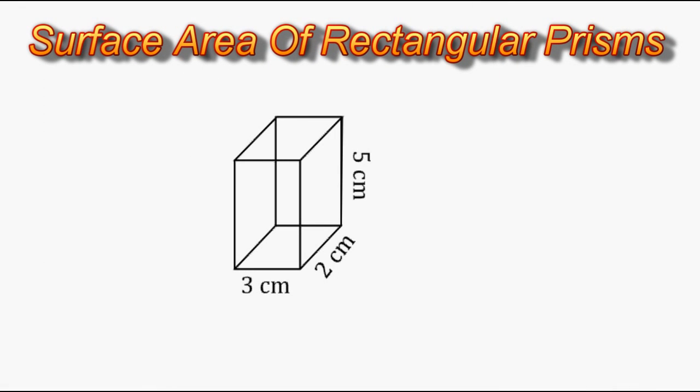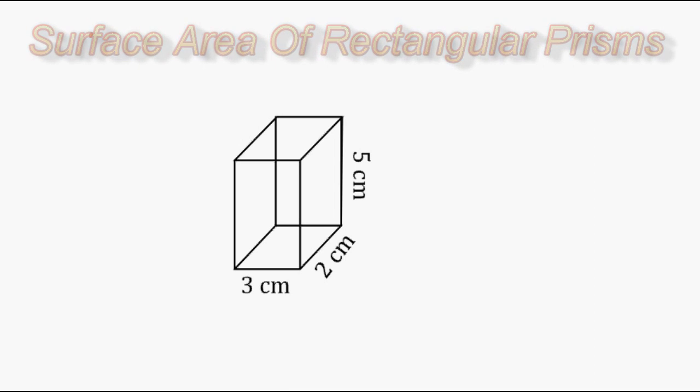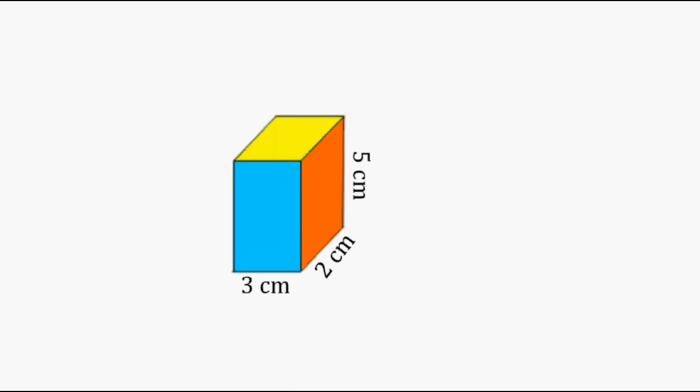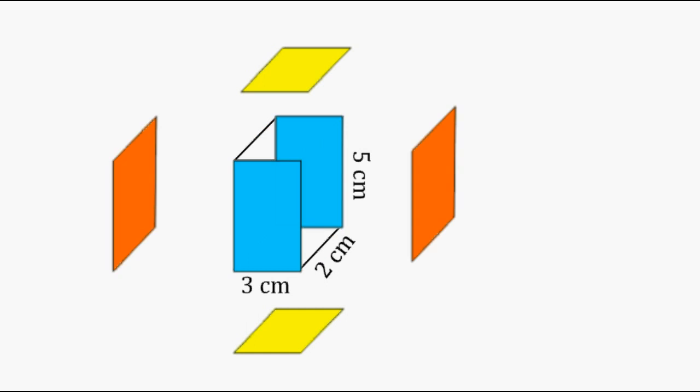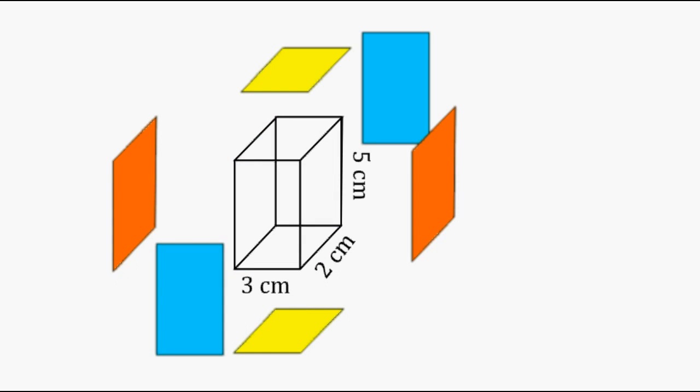In this tutorial, what we're going to do is practice finding the surface area of a rectangular prism. Surface area of any object is really just finding the individual area of each surface of the three-dimensional object and then taking those results and adding them together.